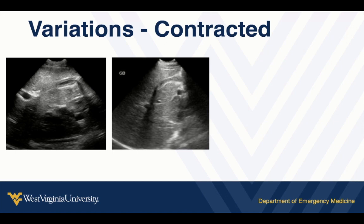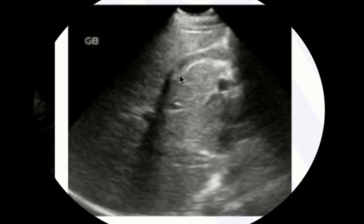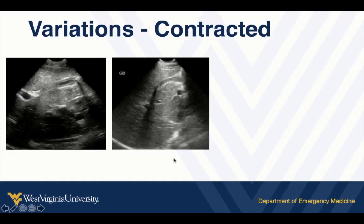If you're examining a patient who just had a chicken dinner, they may have a contracted gallbladder — a bit more difficult to identify, but with practice and landmark recognition you can find it. In this example: liver parenchyma, portal vein, and here's the outline of the contracted gallbladder. When contracted, the wall can look falsely thick, but you still see a nice clean white border. Inside is just the contracted muscle with an edge shadow that, as you fan through, always stays on the edge.